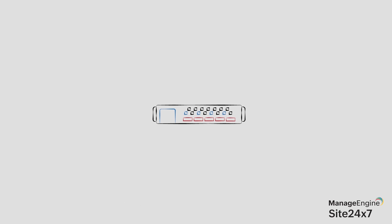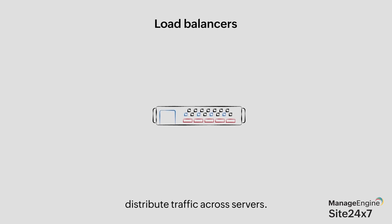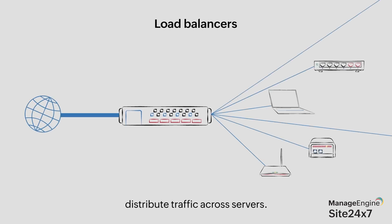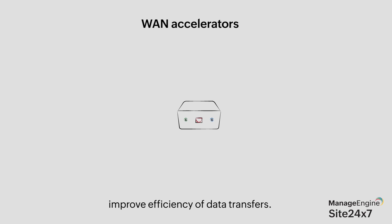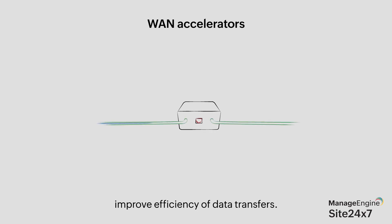Some networks also use other devices like load balancers, which distribute traffic across several servers to increase capacity and reliability, and WAN accelerators, which improve the efficiency and speed of data transfers across LANs.